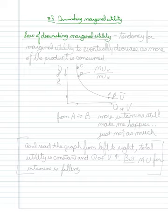Now, economists with laws, it's not like it's something that can't be violated. It can. But we basically are seeing here that there's a tendency for marginal utility to eventually decrease. It's going to eventually decrease as more of the product is consumed.